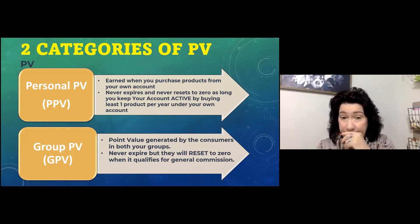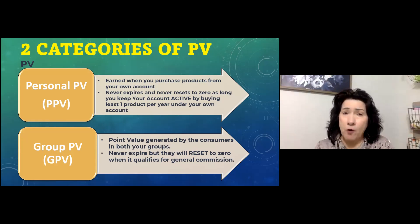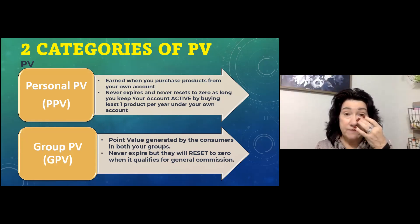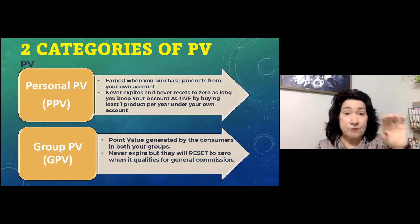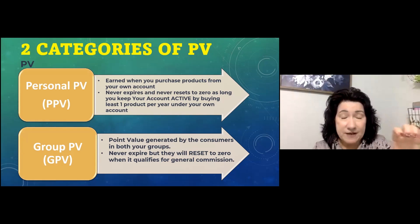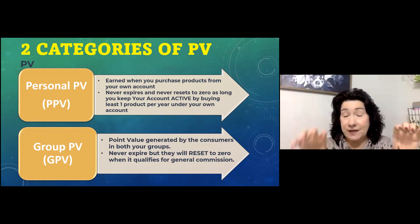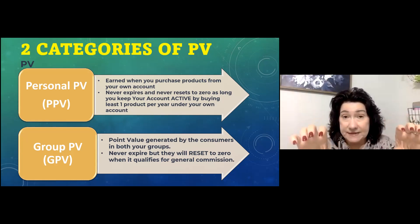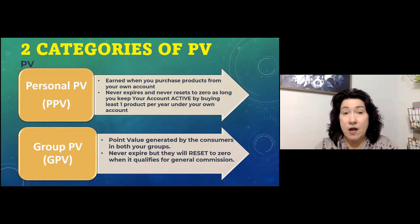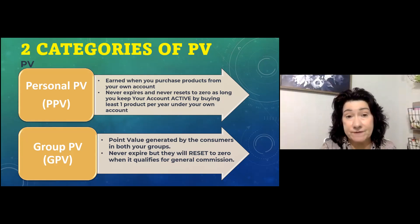Group PV points never expire, but they will reset to zero when you qualify for a commission. To qualify for the $60 commission, you need 300,000 point value on your right side and your left side. When you hit 300,000 on both sides, that's when you get your commission and it resets to zero — but your personal PV never resets. Very generous of the company.